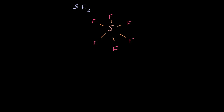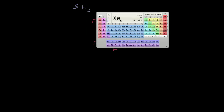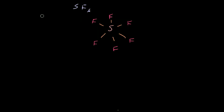The next thing we do is count up how many total valence electrons we'll have. Sulfur is going to have six valence electrons. Fluorine has seven, and there are six of them, so that's 42 electrons for fluorine. When we add that up together, we've got 48 total.